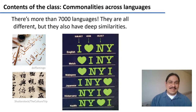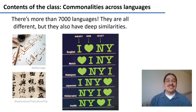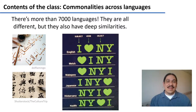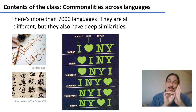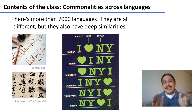For example, in English we have to say, 'I love New York.' In Japanese, you would have to say, 'I, New York, love.' And in the language Hixkaryana from Brazil, you would have to say, 'New York, I, love.' And every language in the world can be explained with one of these patterns.